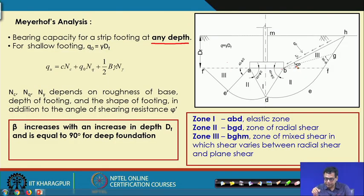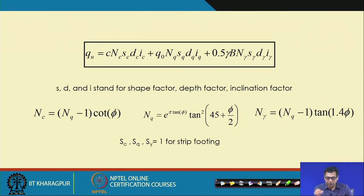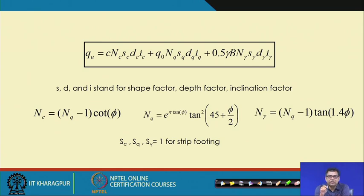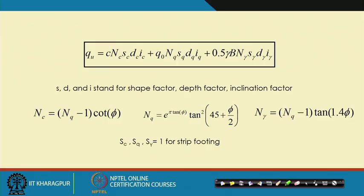After analyzing this failure surface, Meyerhof proposed a bearing capacity equation with factors N_c, N_q, and N_gamma — similar to Terzaghi's but with different values. The final form of Meyerhof's equation is: q = C·N_c·S_c·D_c·I_c + q·N_q·S_q·D_q·I_q + 0.5·gamma·B·N_gamma·S_gamma·D_gamma·I_gamma. Here S denotes shape factors, D denotes depth factors, and I denotes inclination factors. In Terzaghi's theory the load is vertical, but in Meyerhof's theory the load can be inclined, and this inclination effect is included.